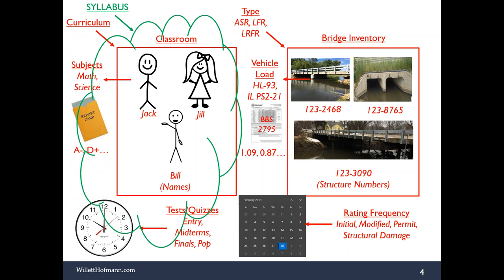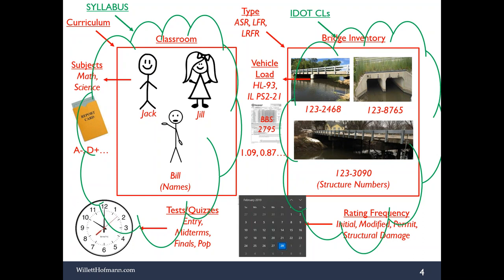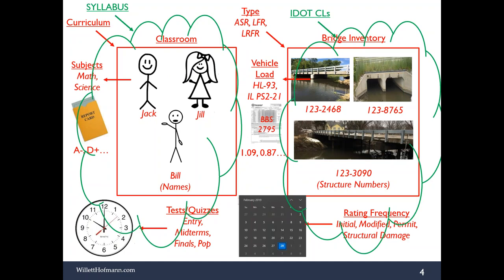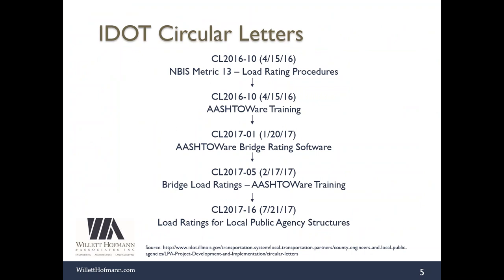Rating frequency is like quizzes: day zero when a bridge opens is the initial load rating, and unexpected events like an impact are like pop quizzes. The final grade IDOT needs to see is the BBS 2795 form. Instead of letter grades or NBIS ratings from one to nine, we deal with rating factors on a numeric scale — greater than one means the bridge passes, less than one means it fails. The syllabus governing all of this is the IDOT circular letters.